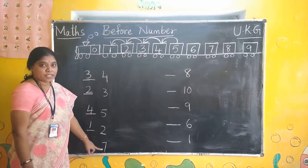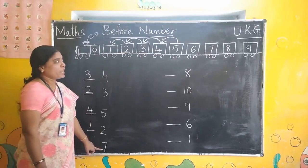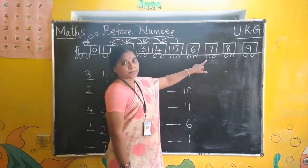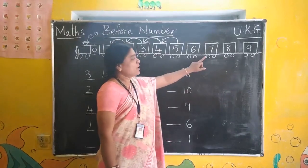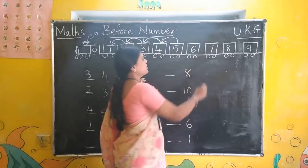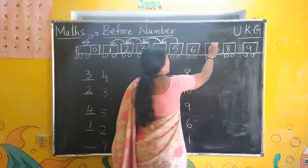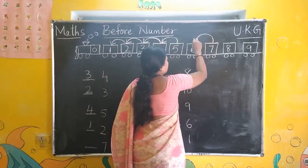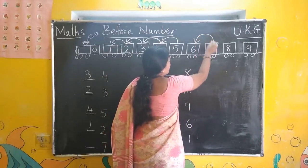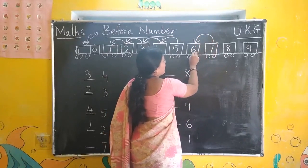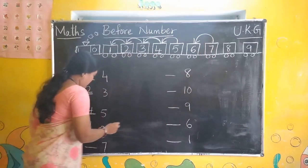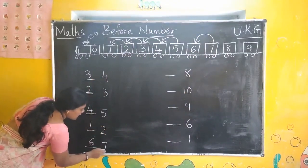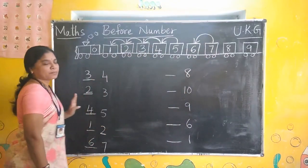Next. 7. Where is 7? Let's draw an arrow to before number. Before 7, number is 6. Write it here. 6 and 7.